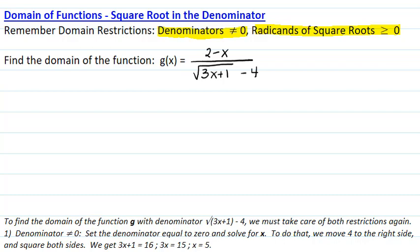First, we must make sure that the denominator is not equal to zero. So I'm going to set the denominator equal to zero and solve for x. To do that, I will move the 4 to the right, and then I will square both sides.